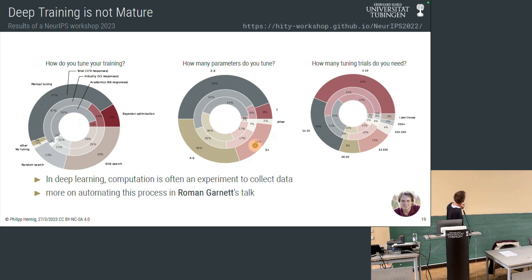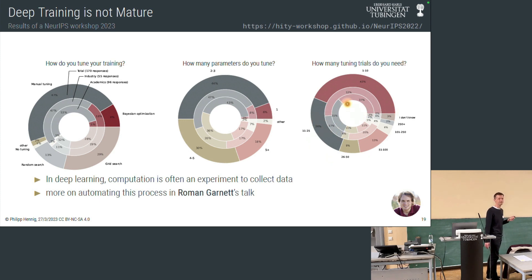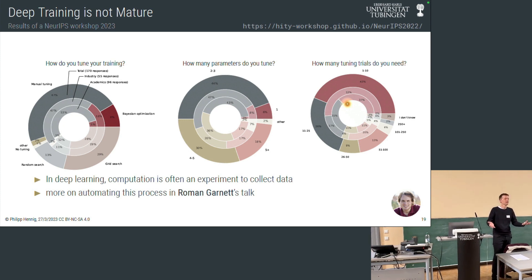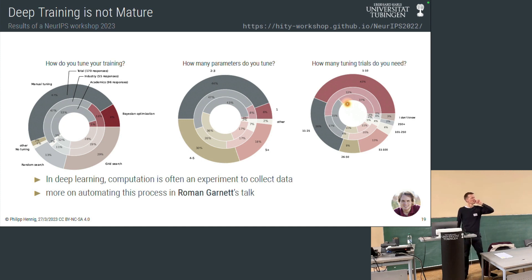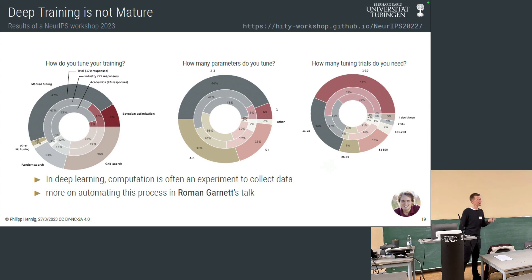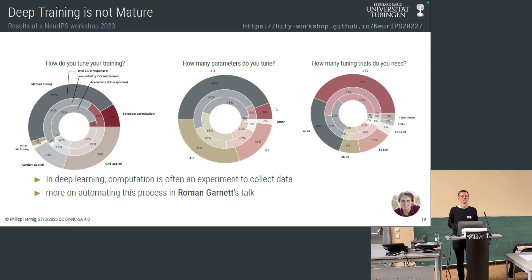Sadly, about half of people doing deep learning research answered that they do manual tuning — they don't use any mechanism whatsoever to tune their parameters. Even large industrial teams look at at best four things: the loss and accuracy on training and test sets, and sometimes the gradient norm in the network. When it starts to wobble, they know they're in dangerous territory and have to reduce the learning rate. About half the people answering said they are tuning more than five parameters — sometimes ten or more — and more than half run more than ten tuning trials, sometimes several hundreds. That's very clear evidence of wasted resources.